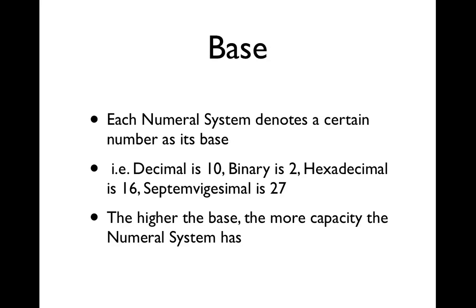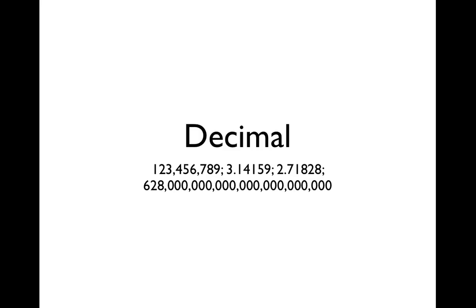Now, each numeral system has a certain base of it, like decimal is base 10, binary is base 2, and hexadecimal is base 16, septum vigesimal is base 27. Of course, there's a whole flock of other different numeral systems, and the higher the base is, the more capacity the numeral system has.